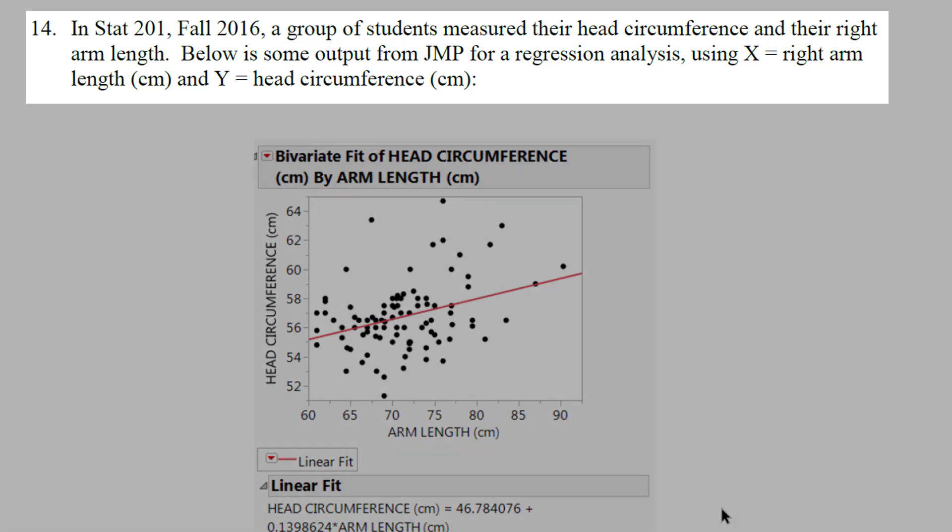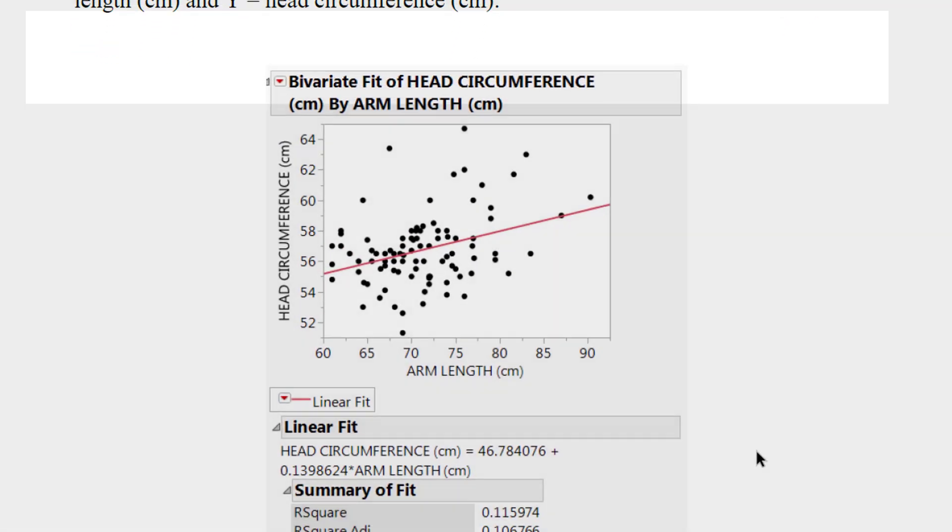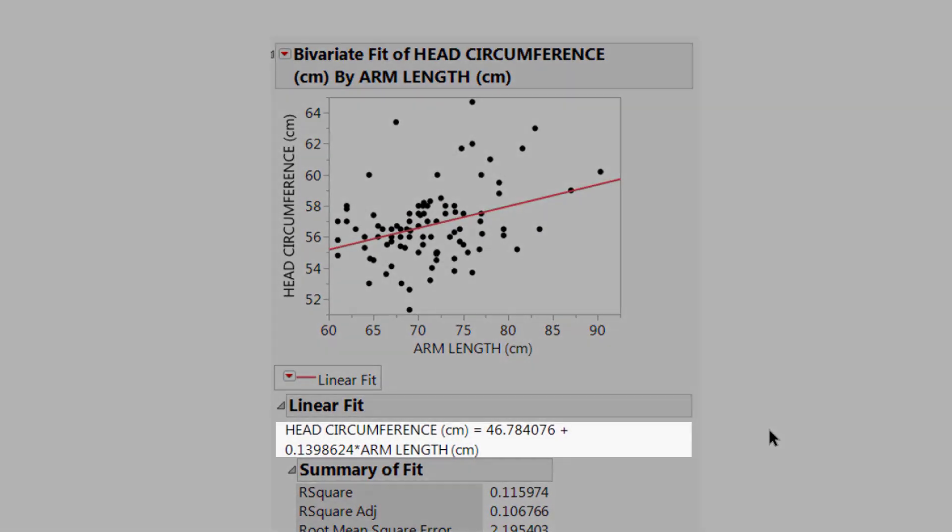Question 14 is another problem going over regression. What we see right here is we had students predict their head circumference using their arm length. We actually get the regression equation down here and we have that the predicted head circumference is equal to 46.78 plus 0.39 times the length of someone's arm.